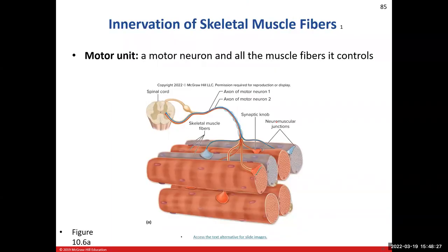This brings us to what a motor unit is, combining concepts from the nervous system into the muscle chapter. A motor unit is one single motor neuron and all the muscle fibers it controls. That number can vary — one motor neuron can innervate one muscle fiber or up to 100 muscle fibers.